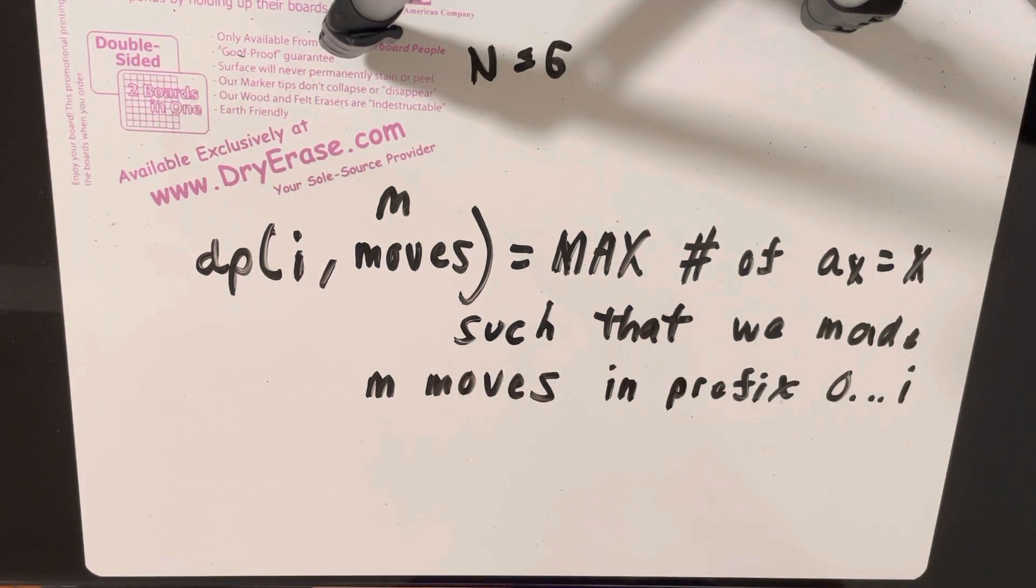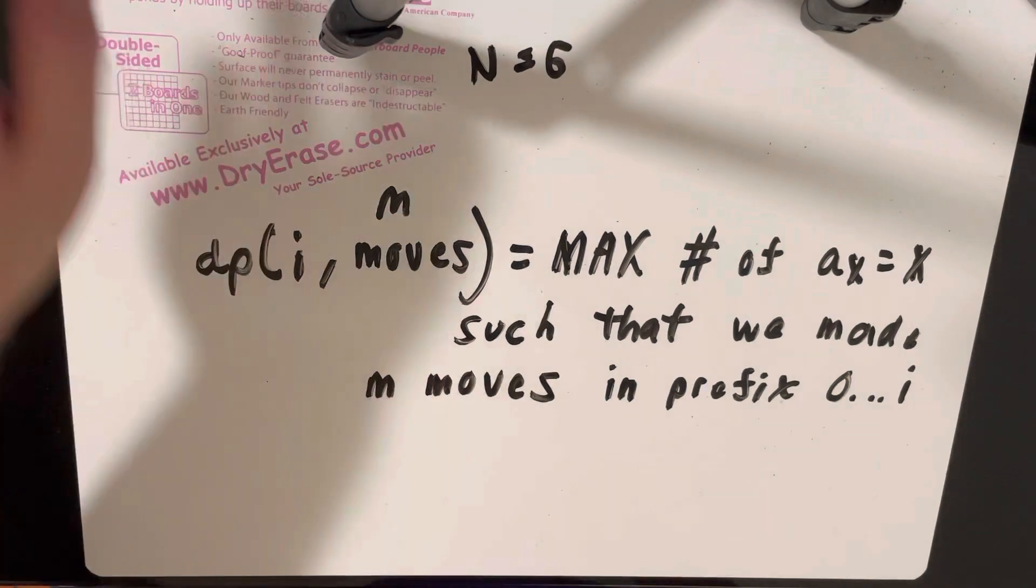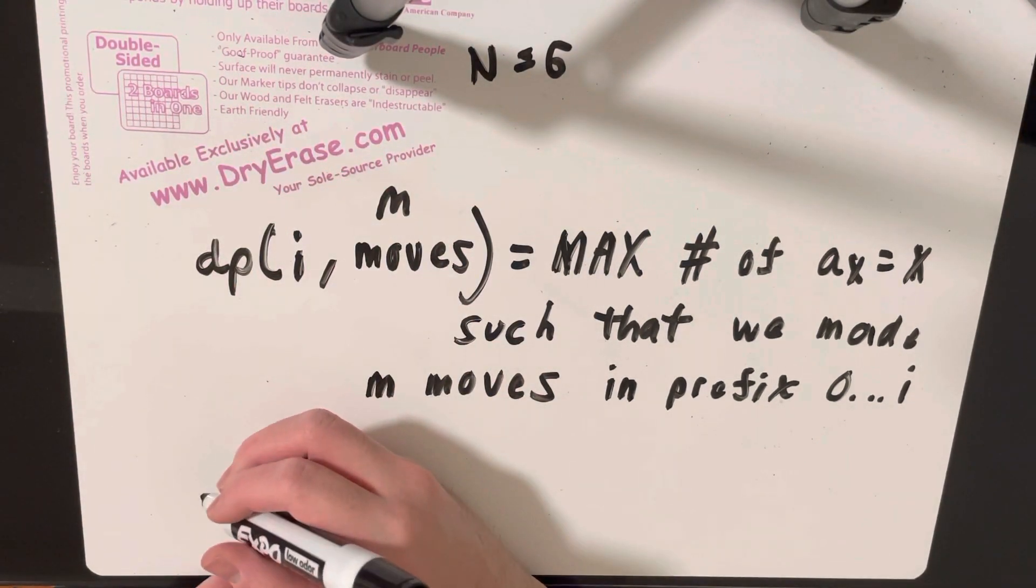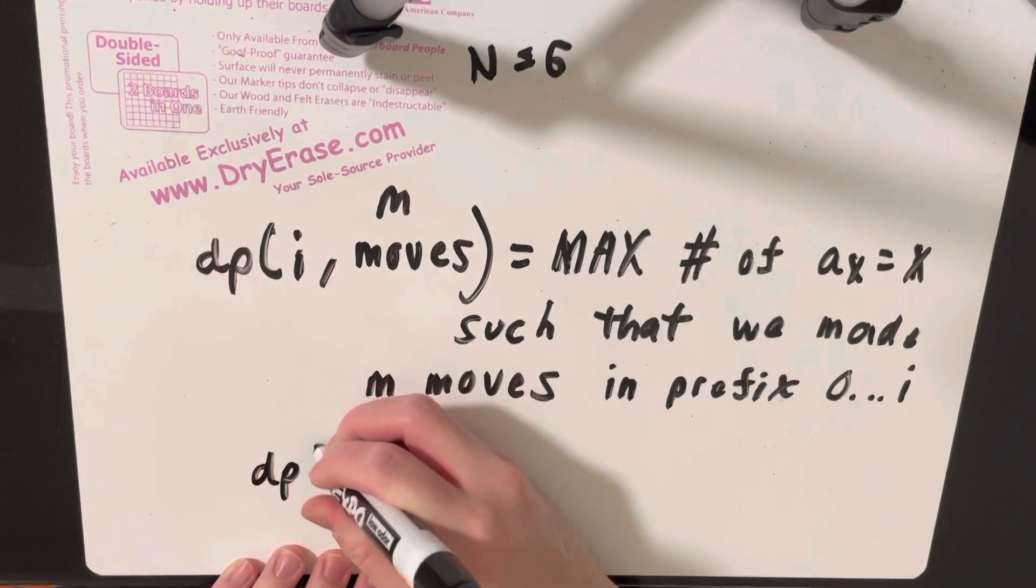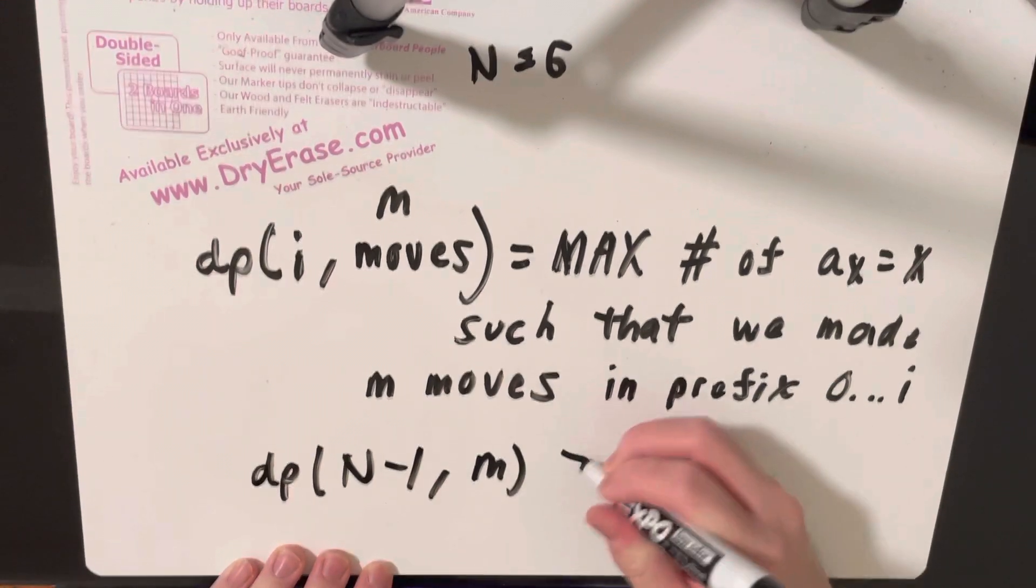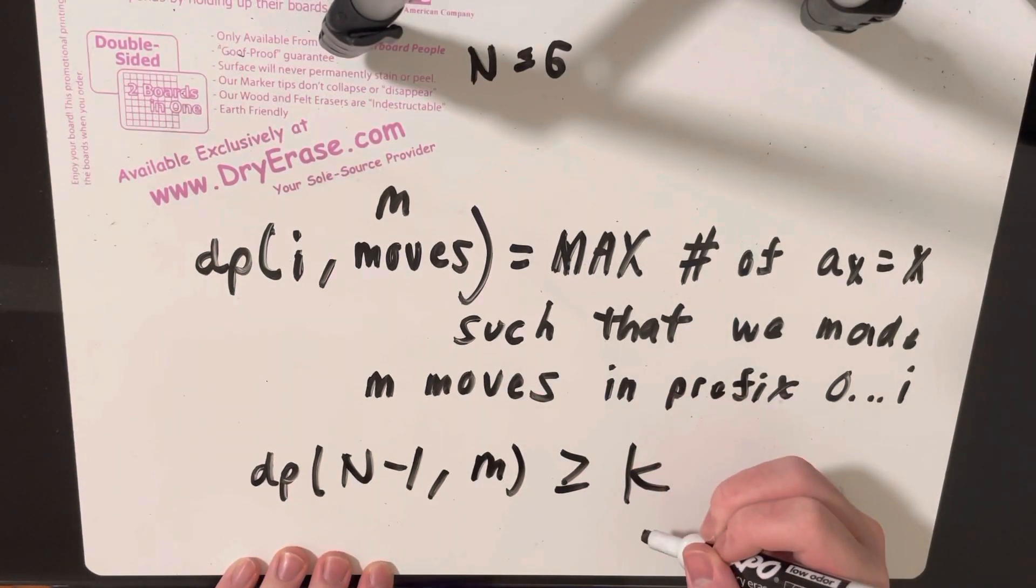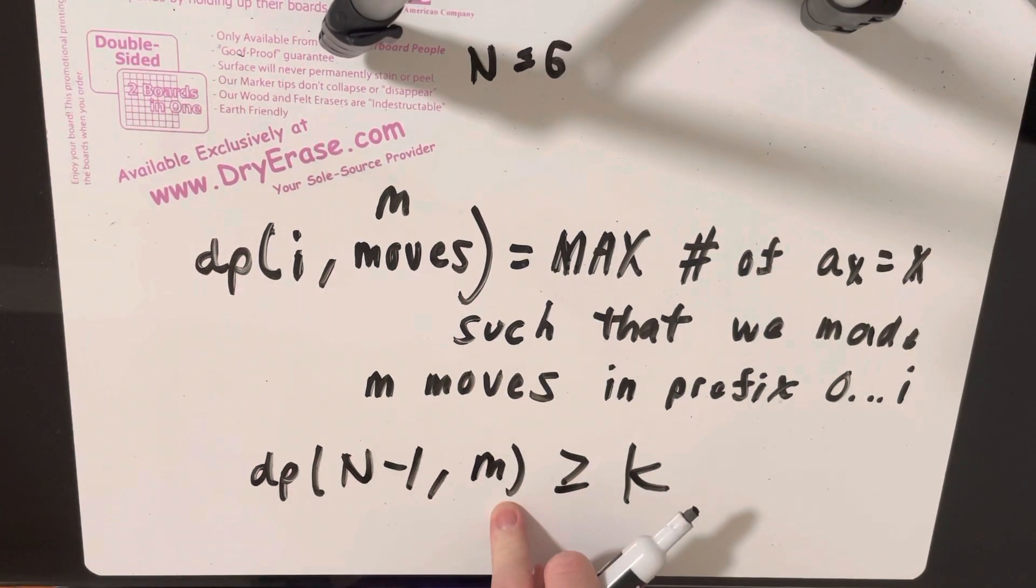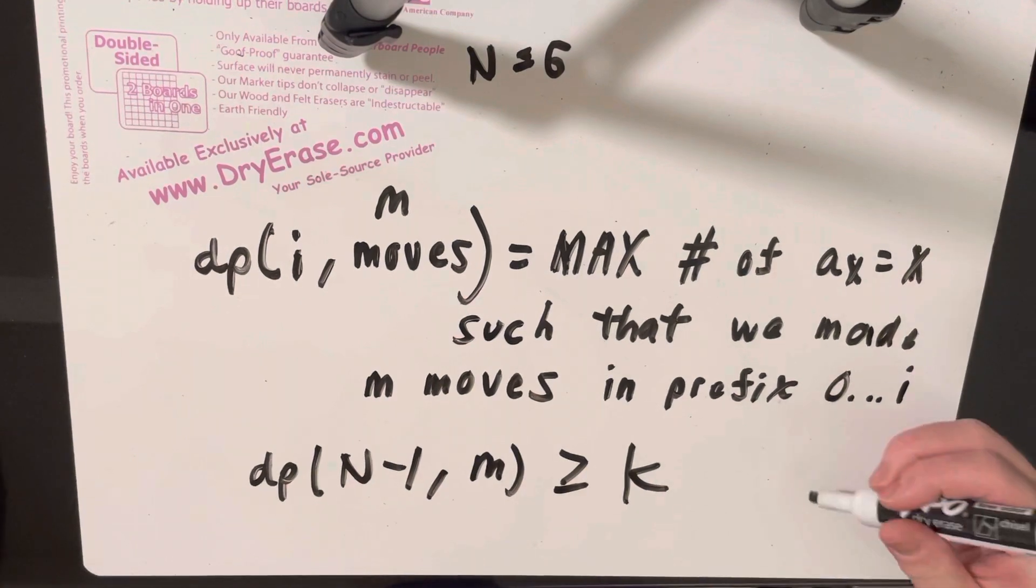I'm sure there probably exists more than one solution for this, but this is how I did it. And so why is this DP state enough to solve the problem? Well, the reason why is after we calculate all these DP values, we can simply just find the smallest m such that DP of n minus 1 and m is at least as large as a given k. And if obviously all of these DP values for all m are less than k, then the answer is just negative 1.